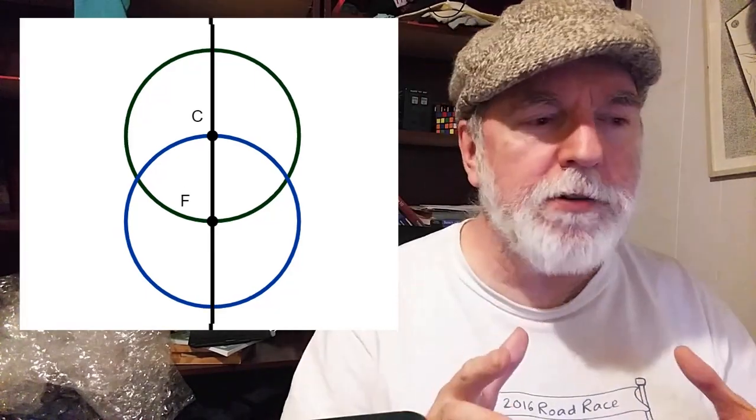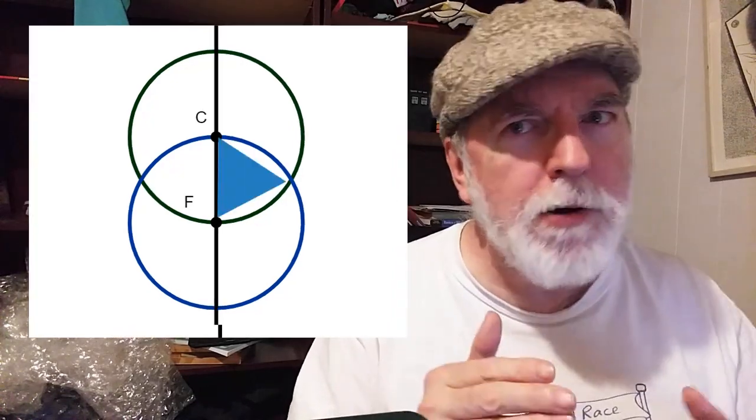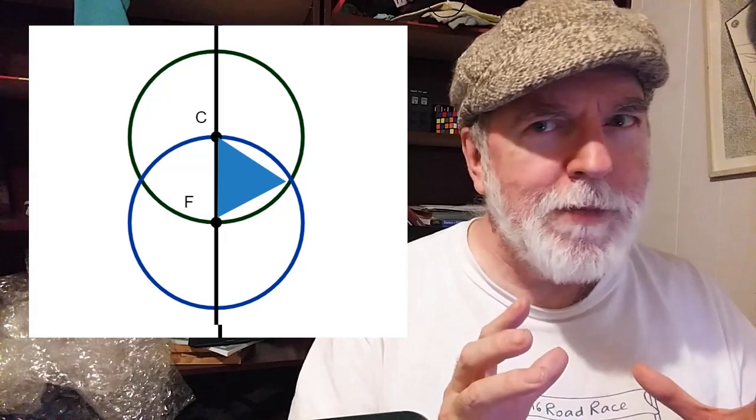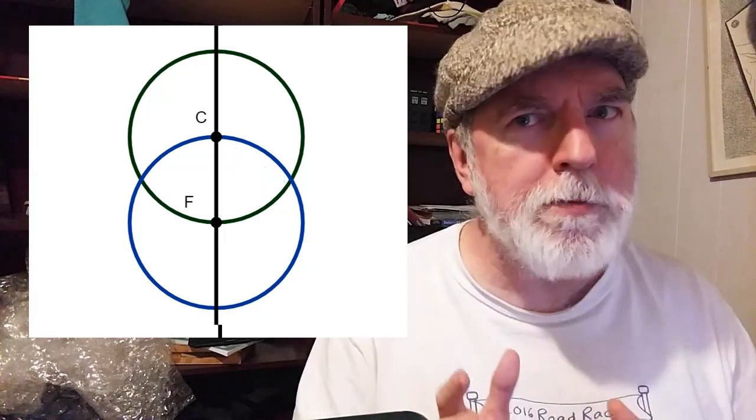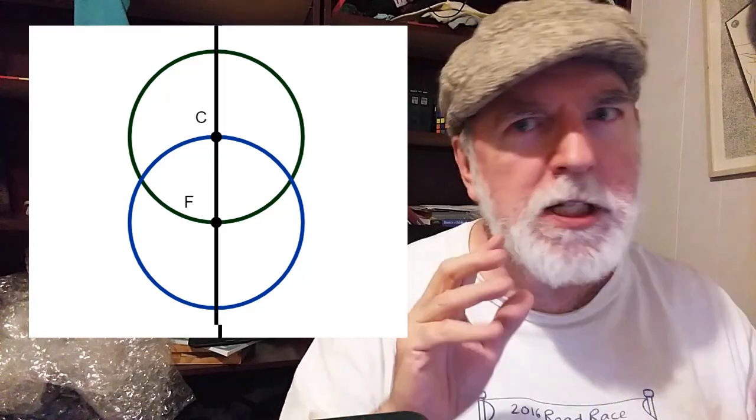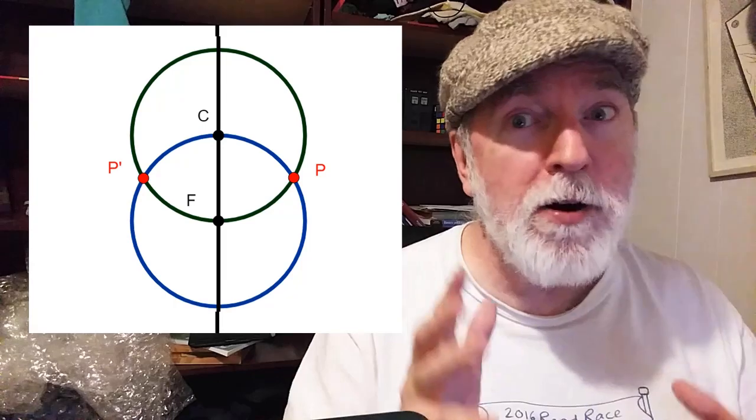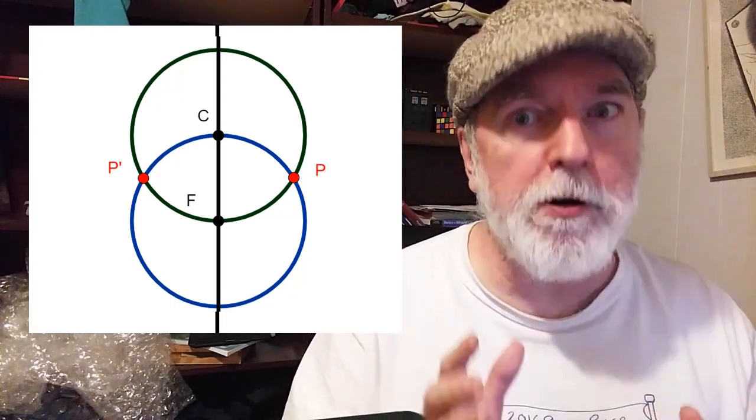In that construction, we create an equilateral triangle. Now I'm going to try to draw as few of those segments as possible, so we don't get really cluttered up here. Where our two circles meet, we'll call those points of intersection P and P'. For now, let's just look at P, because we're going to draw a third circle.